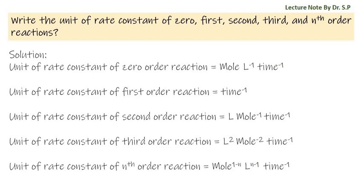From this nth order reaction unit we can derive other order reactions. For example, if we put 1 instead of n in the nth order reaction unit, we will get the unit of first order reaction. If we put 2 instead of n in the nth order reaction unit, we will get the unit of second order reaction.